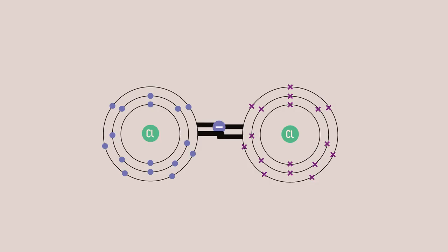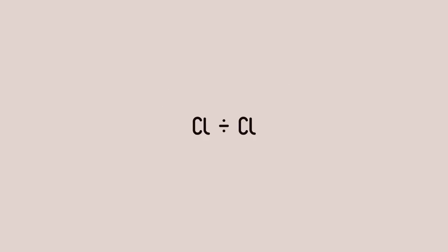You may have seen several ways to represent covalent bonds, like this, or this, or this, or this, or even this. In fact, there are many ways to draw a covalent bond.